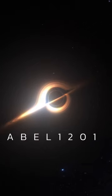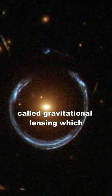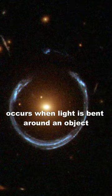The newly discovered Abell 1201 black hole was identified through a new method called gravitational lensing, which occurs when light is bent around an object with immense gravity.